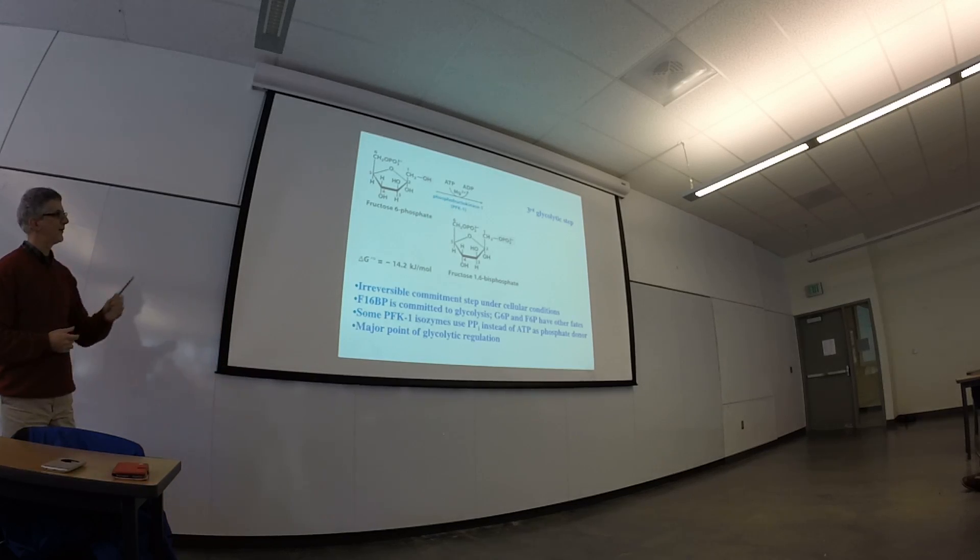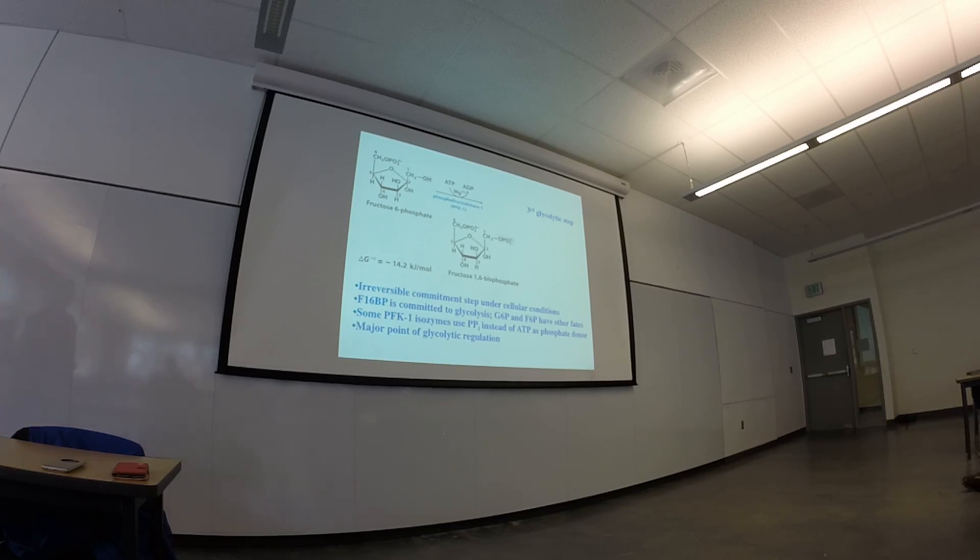There's some differences—some types of phosphofructokinases in different organisms will use pyrophosphate instead of ATP as a phosphate donor, so the energy of driving PPi to phosphates, that's less favorable, so you can imagine that enzyme has other characteristics to compensate. The only other point I made here is that this is a huge major point of regulation in the pathway. So PFK—notice it says PFK1—it turns out there's going to be a PFK2, but we don't have to worry about that yet. That's going to be involved in regulation, but this is an allosteric enzyme and it's going to be a major point of regulation in the pathway.